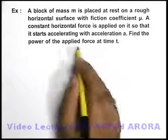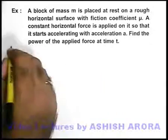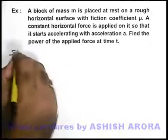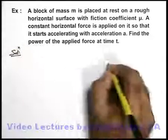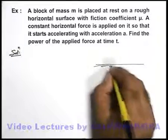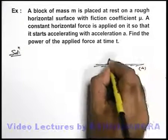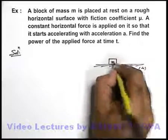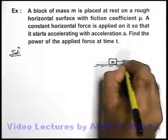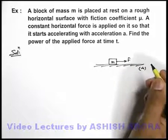That means we need to calculate instantaneous power at a general time t. In this situation we are given that on a rough horizontal surface where friction coefficient is mu, a block is there, and a constant horizontal force say F is applied onto it.